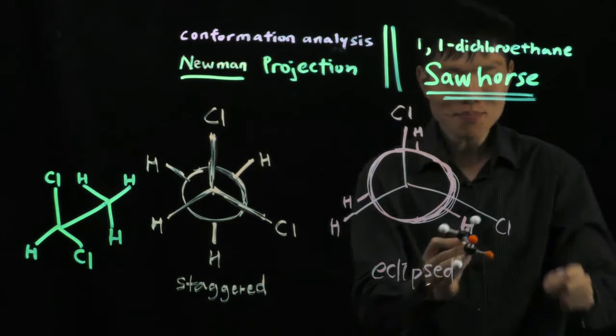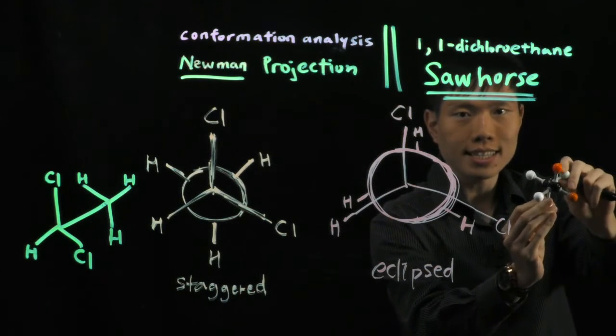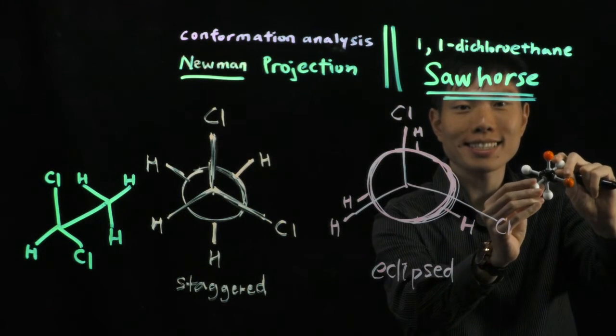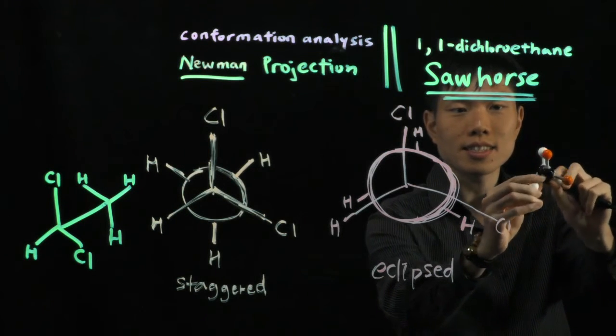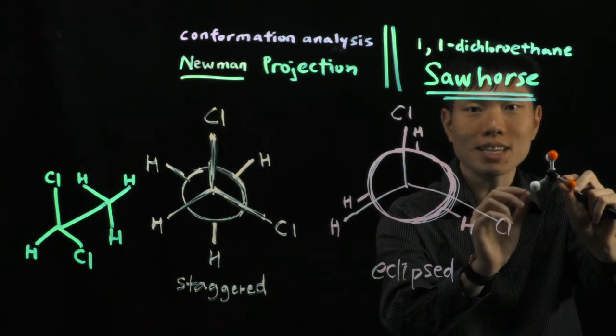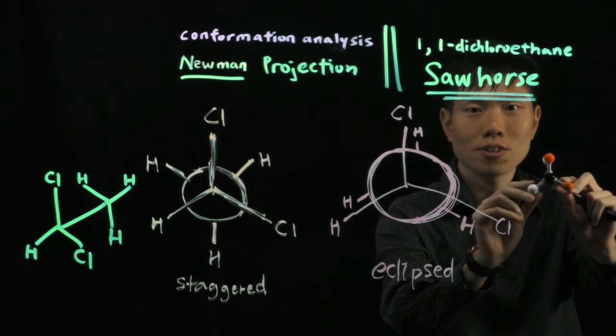Now, on the other side, the eclipsed. Again, let me try to show you, and then rotate 60 degrees. So now it's still staggered. I rotate - this is eclipsed because the front atoms are blocking the back atoms as a whole. Can you see?